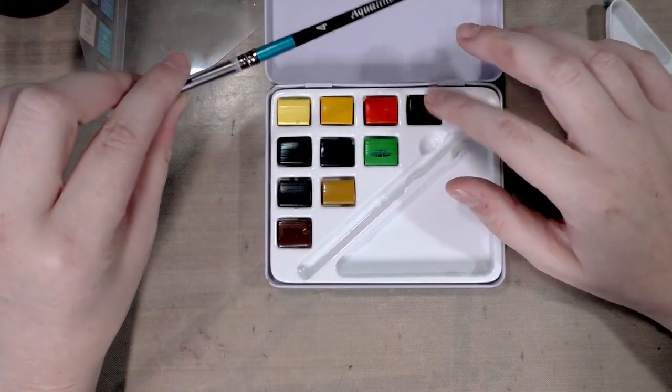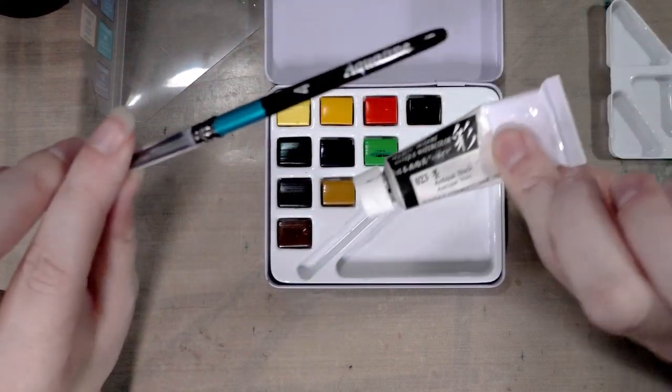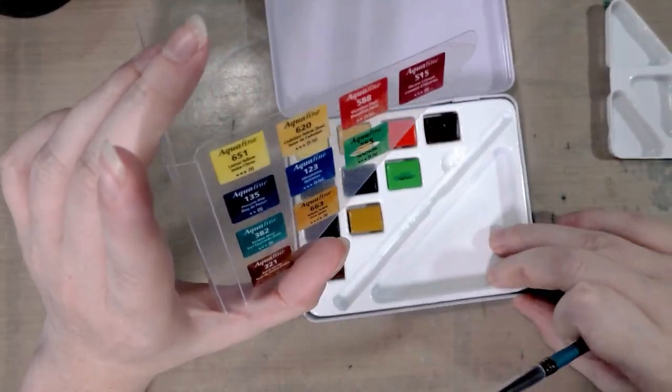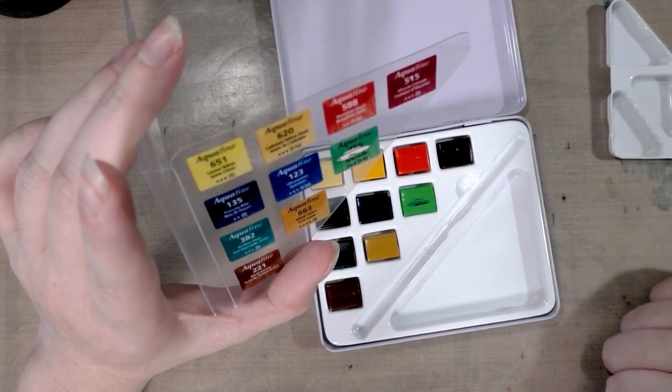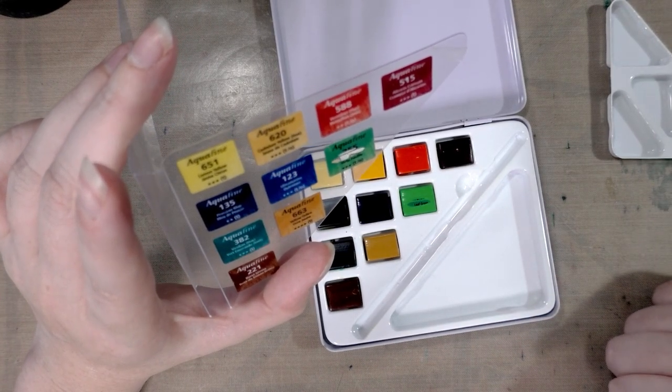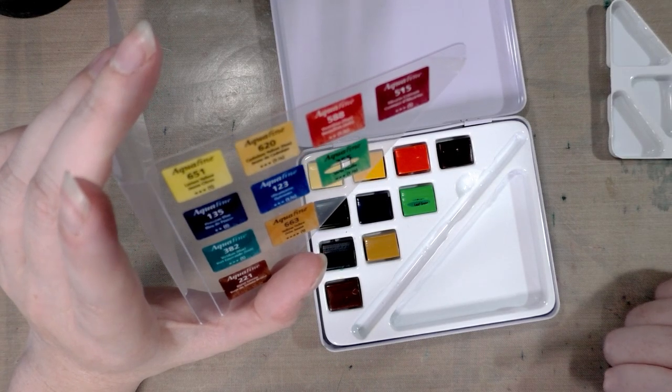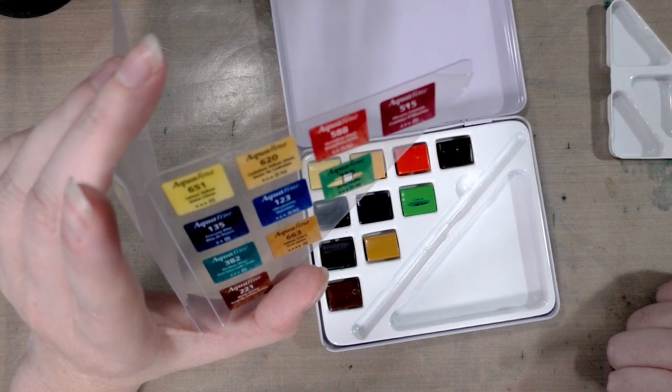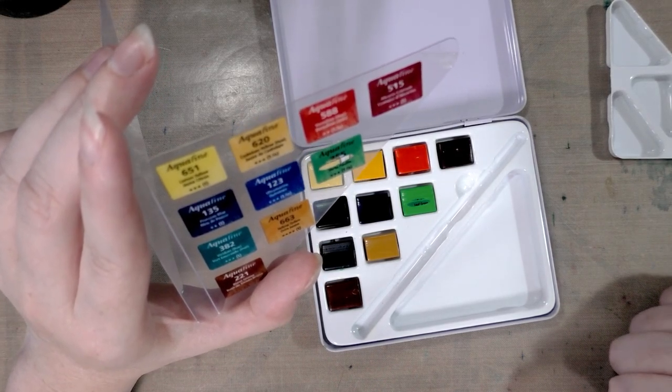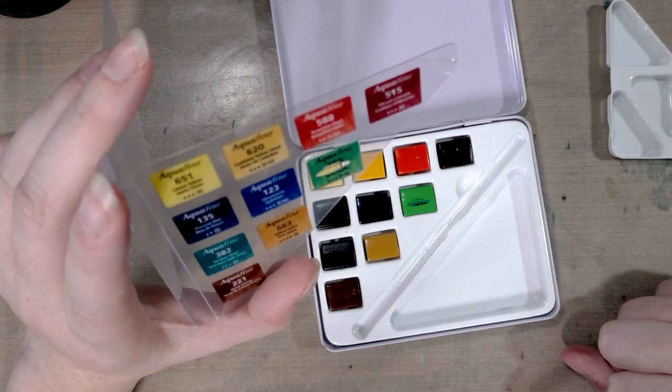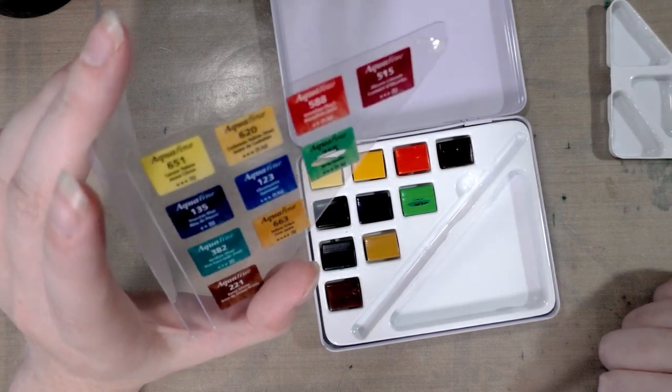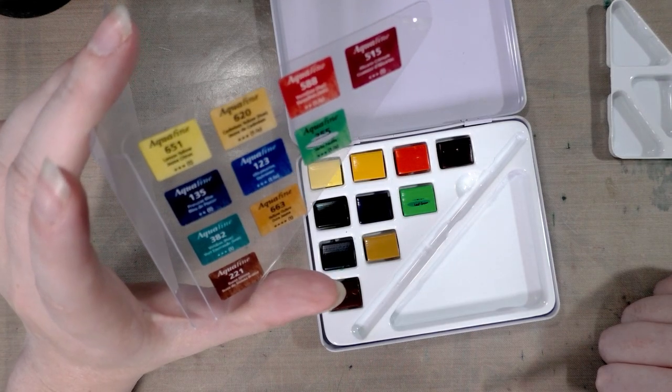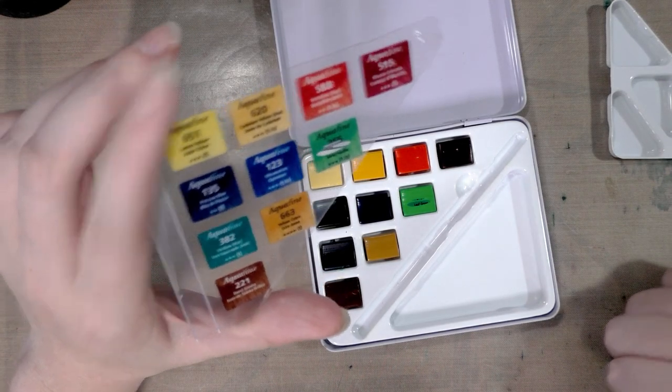The colors we got are 651 Lemon Yellow, 620 Cadmium Yellow Hue, 588 Vermilion Hue, 515 Alizarin Crimson, 315 Prussian Blue, 123 Ultramarine, 355 Leaf Green, 382 Viridian Hue, 663 Yellow Ochre, and 221 Burnt Sienna.